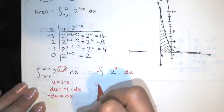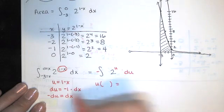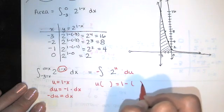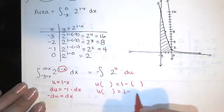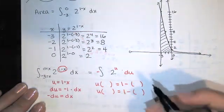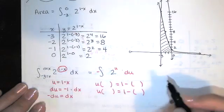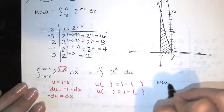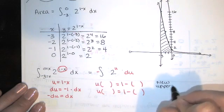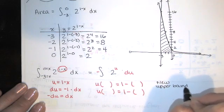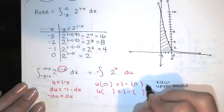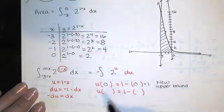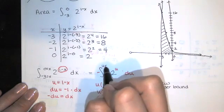In order to get the bounds, you just take that equation for u and you substitute in the original bounds. So our old upper bound was x=0. So this is going to give us our new upper bound. If I substitute in x=0 right here, I find out that u has to equal 1. So my new upper bound is u=1.